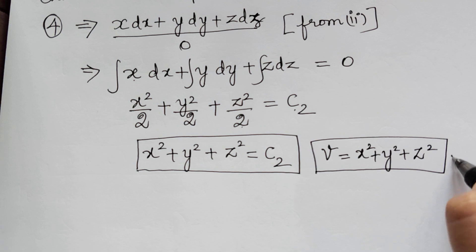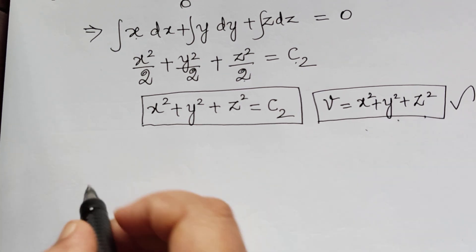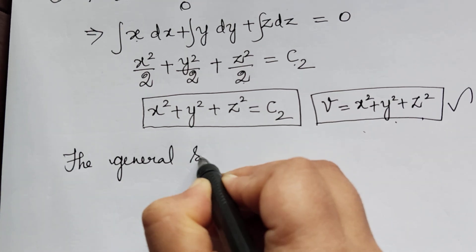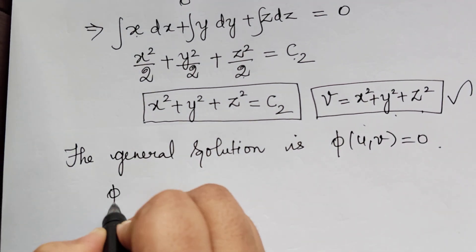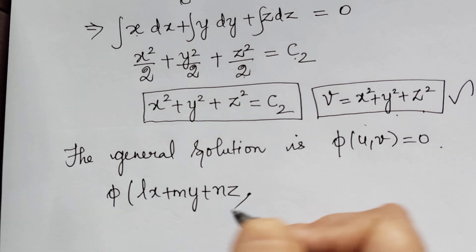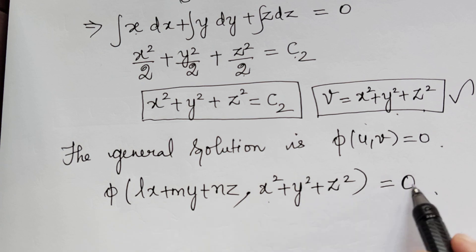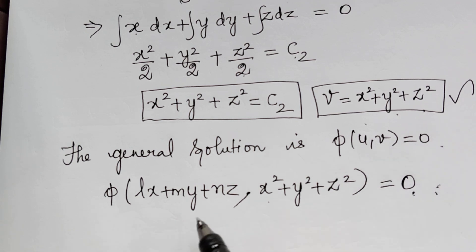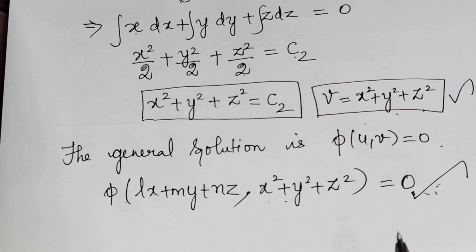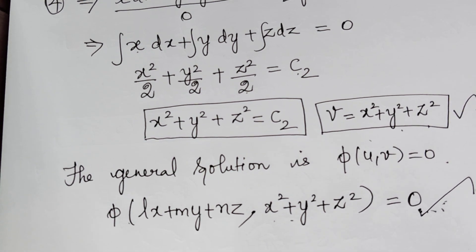Hence we have obtained the two solutions: u = lx + my + nz and v = x² + y² + z². Therefore the general solution is phi(u, v) = 0, that is phi(lx + my + nz, x² + y² + z²) = 0. This is a very significant problem from the examination point of view and has appeared in various question papers. Please go through this problem step by step very carefully. Thank you.